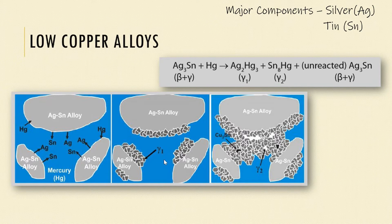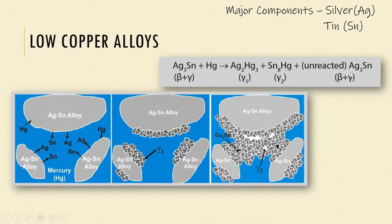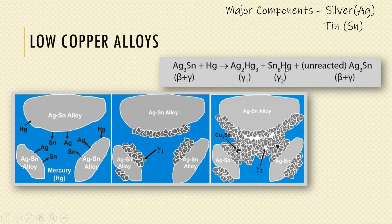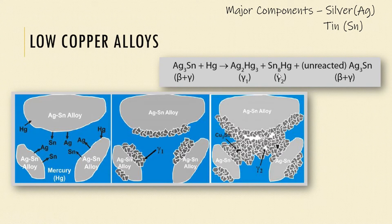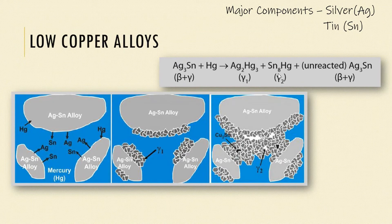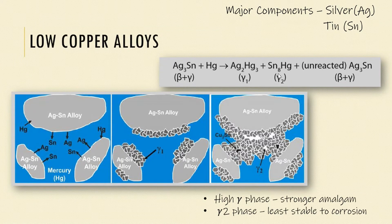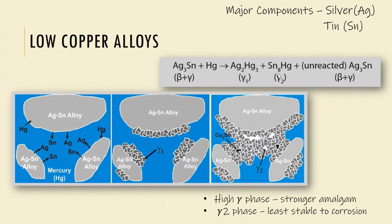There is some amount of unreacted alloy powder which consists of the silver and tin compound, and this is referred to as the gamma phase. The silver and mercury compound which is formed is referred to as the gamma 1 phase, and the tin and mercury compound is referred to as the gamma 2 phase. The properties of hardened amalgam depend on the proportion of the reaction phases. If there is more gamma phase, the stronger is the amalgam. Gamma 2 phase is the weakest component and is less stable to corrosion.